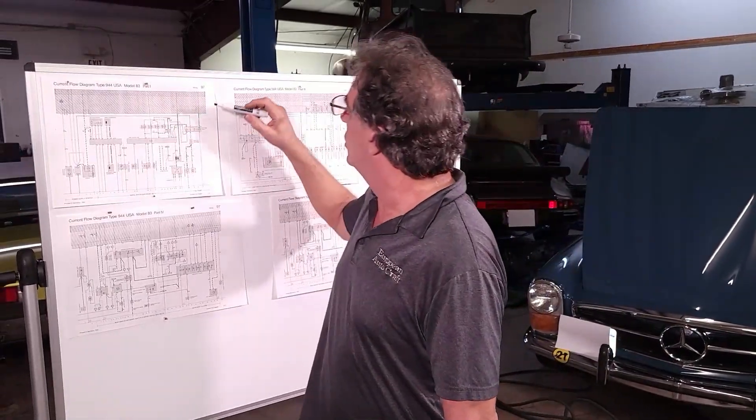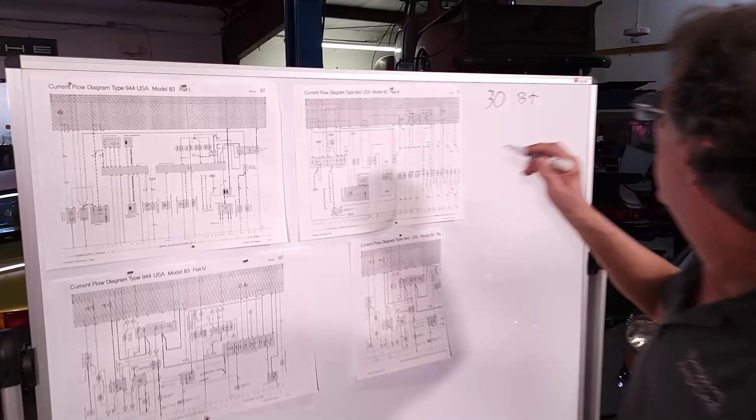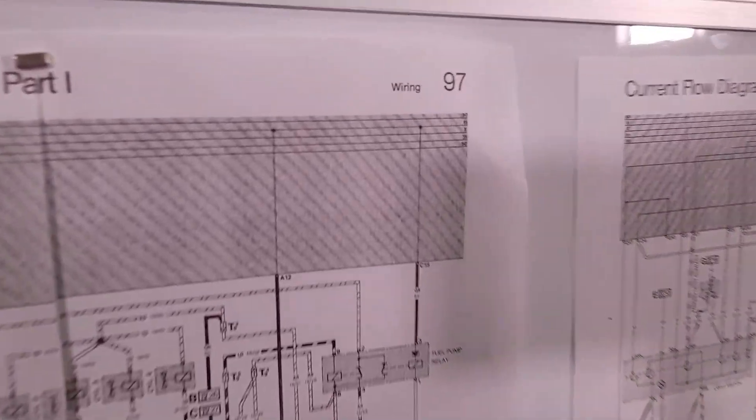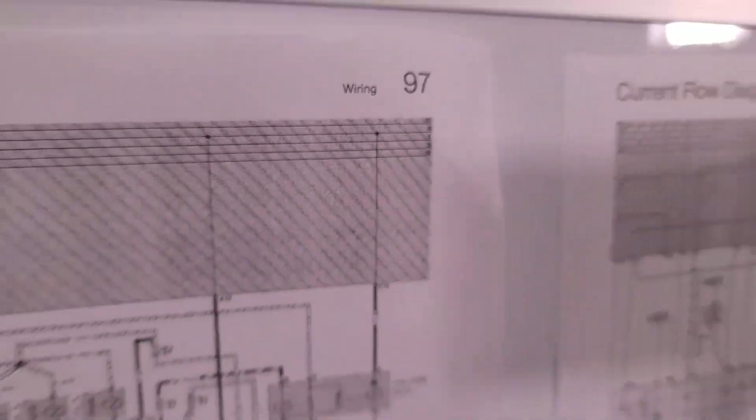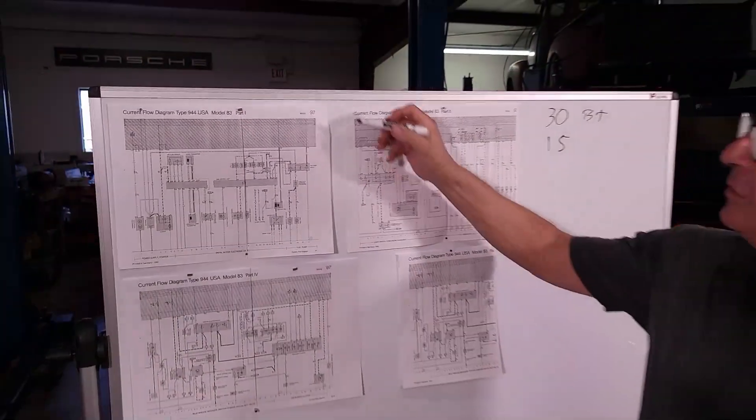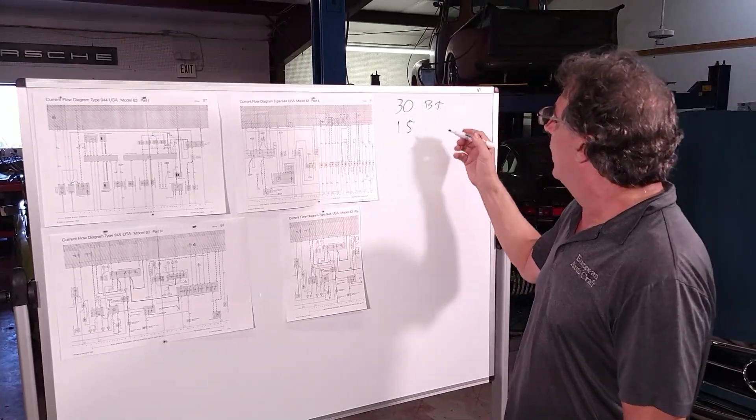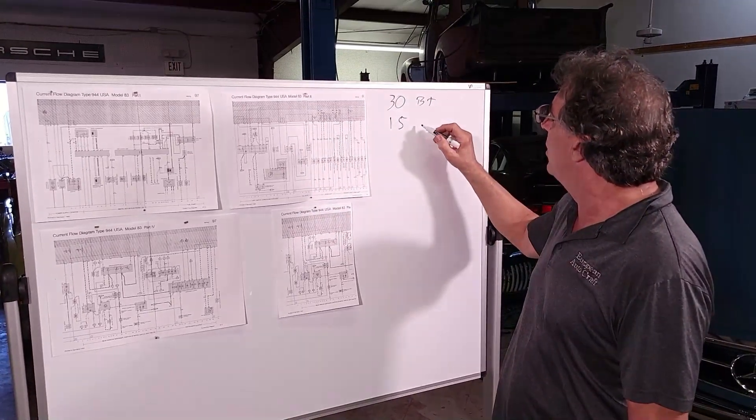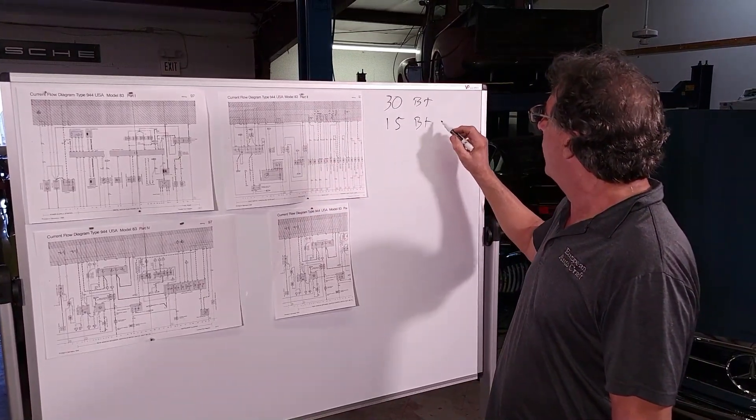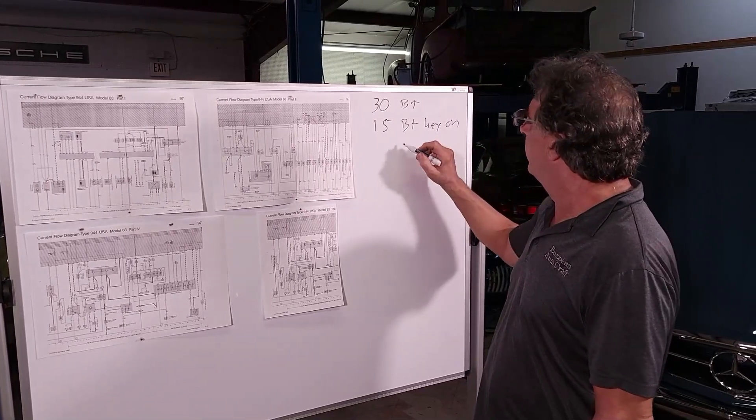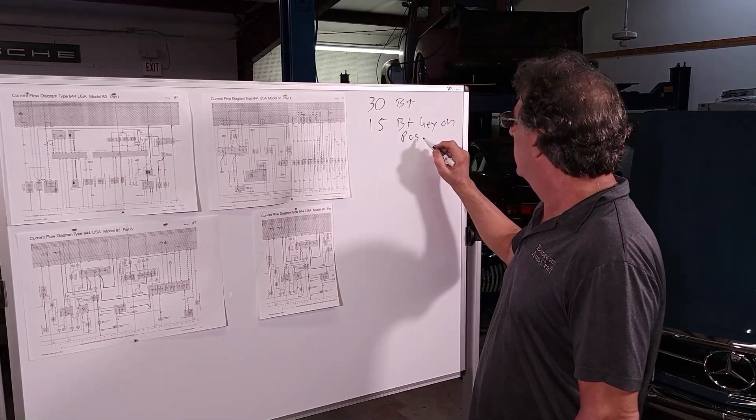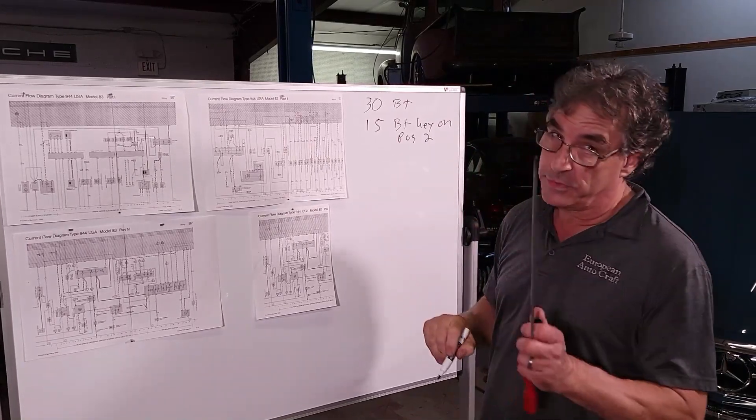The next one down is 15. All Porsche, I think a lot of the European wiring diagrams, they use this numbering system, so it works just about for any European car. 15 is power with the key on. So it's battery power, but key on, position one or position two. Sorry, position two.